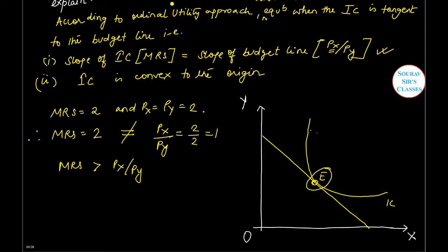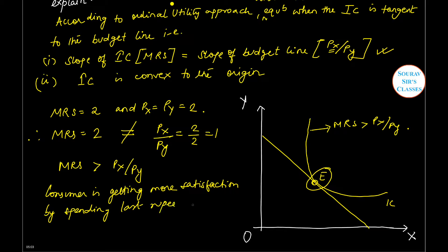This indicates MRS is greater than Px/Py. What does this mean? This means that the consumer is getting more satisfaction by spending the last rupee on good X than on good Y.